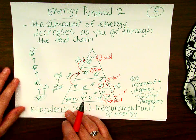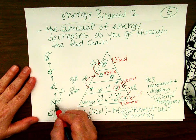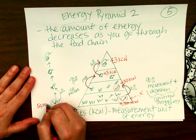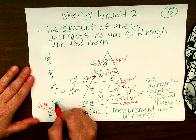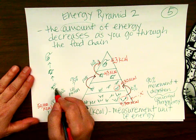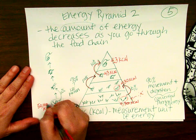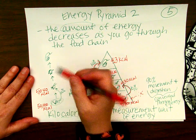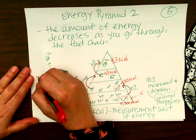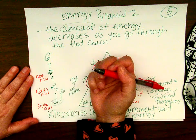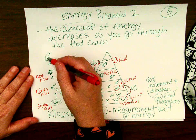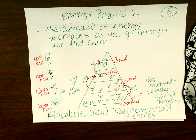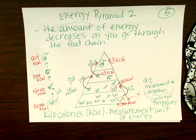Let's do one more example. This patch of grass converted radiant energy from the sun into 50,400 kilocalories. The grasshopper only gets 10%, so remove one zero: 5,040 kilocalories. The bird only gets 10% of that, so the bird gets 504 kilocalories. The snake only gets 10% of that, so the snake gets just 50.4 kilocalories. That's it for our notes — great job!